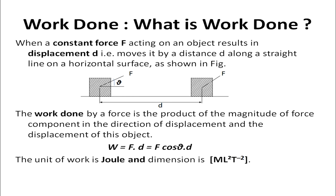To know why this is so, we will talk about what work done actually is and its definition. When we talk about work done, we start with a mass and apply a constant force on it. We see that this force displaces the object, and after a certain displacement D it reaches another point. When a constant force acting on an object results in a displacement D along a straight line on a horizontal surface, then work is done. The work done by a constant force is the product of the magnitude of the force component in the direction of the displacement and the displacement of the object.